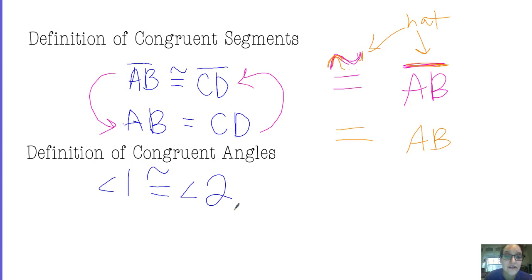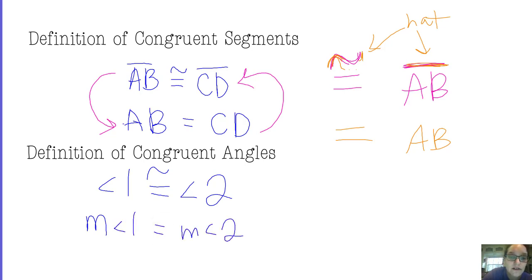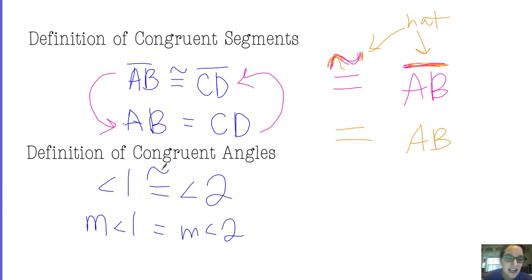If angle 1 is congruent to angle 2, we can say that the measure of angle 1 is equal to the measure of angle 2. Think of it like this: when the equal sign has a hat on top — like the congruent symbol — you don't need measures. If they're just equal, you do need measures.